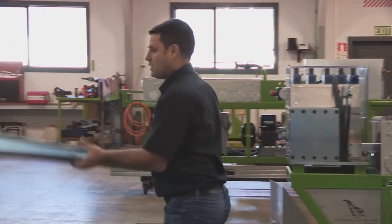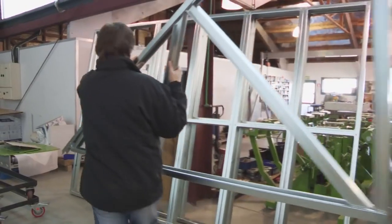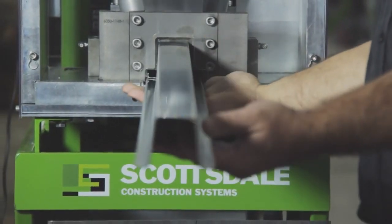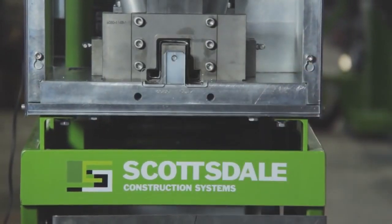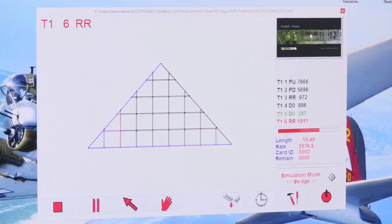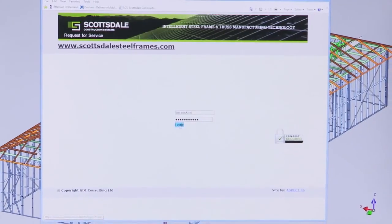As members are extruded from the roll former, the fabrication team assembles the framing. Scottsdale Construction Systems' intelligent steel frame and truss manufacturing technology comprises intelligent design and roll former software, intelligent roll forming machinery, and roll former machine and software support.